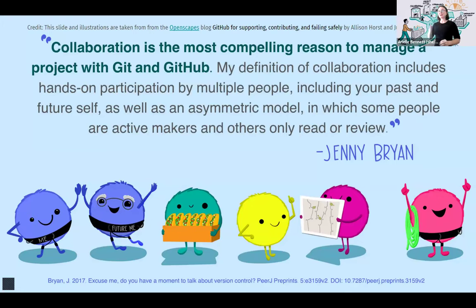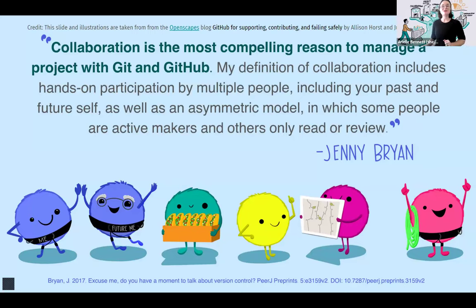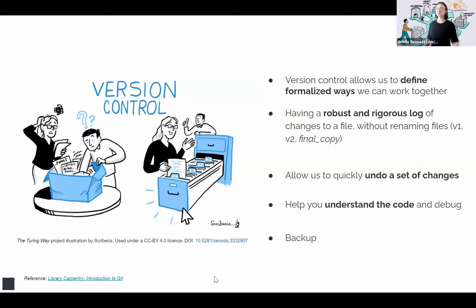'Collaboration is the most compelling reason to manage a project with Git and GitHub. My definition of collaboration includes hands-on participation by multiple people, including your past and future self, as well as an asymmetric model where some people are active makers and others only read or review.' This is a very accurate reflection of the Turing Way, where we have people reading and writing chapters, people reviewing material, and people coming back to chapters they've previously written to update them. That's why we love using Git and GitHub to manage it.